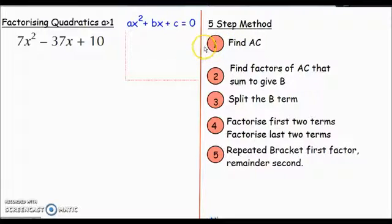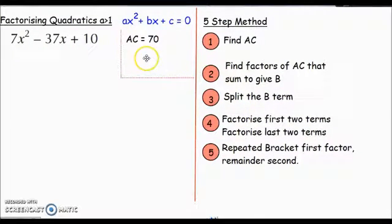Step 1 says find AC. That is very straightforward. Where's A? A is in front of the x², so that's 7. Where is C? That's the number on the end, that's +10. So AC is 7 × 10, which gives me 70. We've done step 1 already, just a times table.